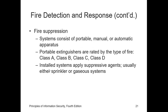Fire suppression systems can consist of portable, manual, or automatic apparatus. The portable extinguishers are rated by the type of fire. We have fire extinguishers that are class A, class B, class C, and class D. Class A is for fires of ordinary combustible fuels.